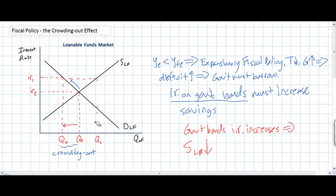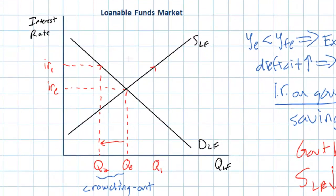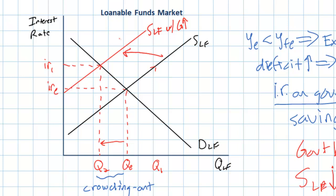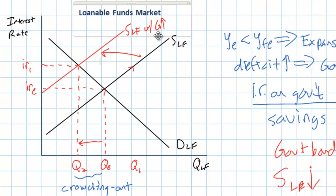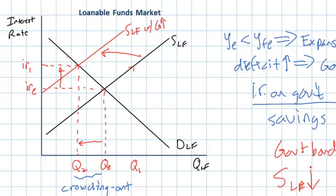What could happen in the market for loanable funds is not that the demand for loanable funds will increase; rather, the supply of loanable funds available to the private sector might decrease. An increase in the interest rate on government bonds will incentivize households to save money in government bonds rather than saving money in private banks. This would lead to a decrease in the supply of private loanable funds with the government's borrowing, because households will want to lend their money to the government rather than saving it in commercial banks. Funds available for private investment and consumption become more scarce, and the interest rate charged by banks to borrow those scarce funds will increase.